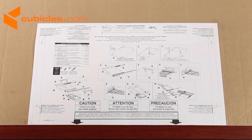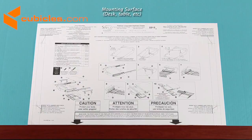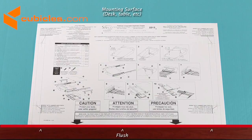Next tape the assembly instructions to the location where we will mount the keyboard tray, such as the underside of a desk. If possible turn the desk or other mounting surface upside down for easier installation. It is important that the instructions are flush with the edge of the mounting surface.